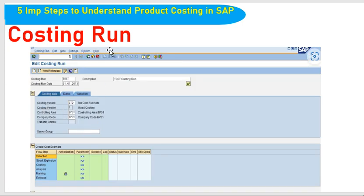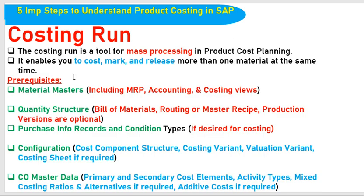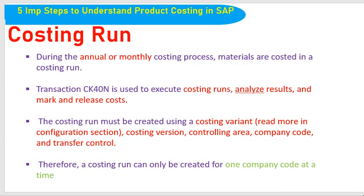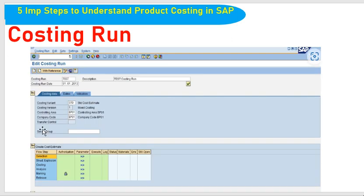In order to run the Costing Run, transaction code CK40 should be used. We should be aware of the Costing Variant, Costing Version, Controlling Area, and Company Code. We need to run the Costing Run for one Company Code only. Materials are costed in the Costing Run, and CK40 is used to execute Costing Runs, analyze results, and mark and release costs. The Costing Run must be created using Costing Variant, Costing Version, Controlling Area, Company Code, and Transfer Controls.